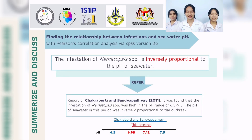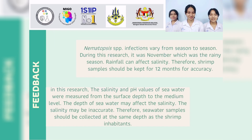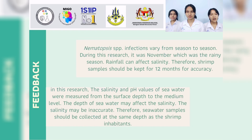The relationship between infection and seawater pH is inversely proportional. Feedback: Nematotic infections vary from season to season. During this research, it was November, which was the rainy season. Rainfall can affect salinity. Therefore, shrimp samples should be collected after rainfall for accuracy. In this research, salinity and pH barriers of seawater were measured from surface depth to the medium level. The depth of seawater may affect the salinity reading and may be inaccurate. Therefore, seawater samples should be collected at the same depth as the shrimp habitat.